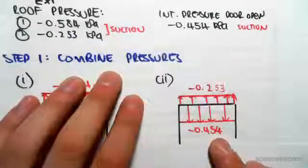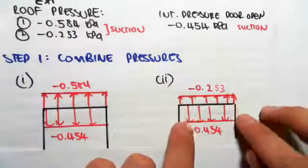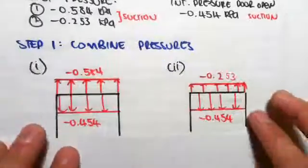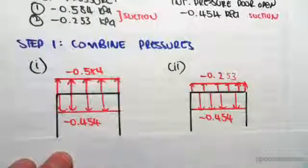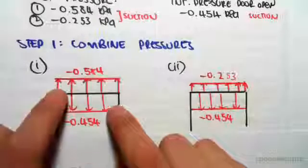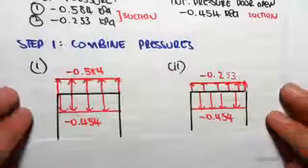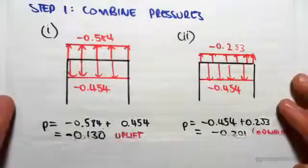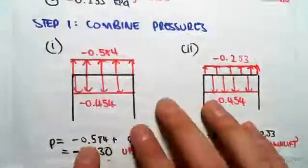Same type of thing: suction, suction, pull, pull. Now based on this we need to work out the worst case. When you've got them going opposite directions it's a little bit more confusing, but this is how I like to do it. So let's look at this case over here first.